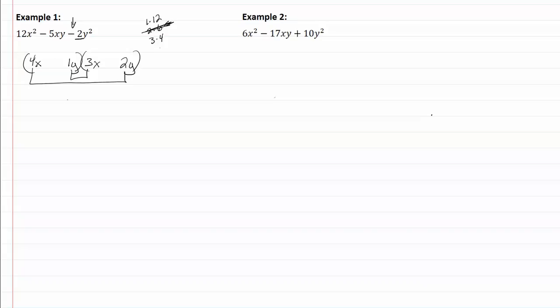We have 4x times 2x which is going to give us 8xy, we are subtracting so it's going to be minus 1y times 3x is going to give us a 3xy and that's going to give us 5xy.